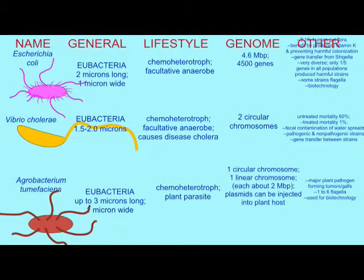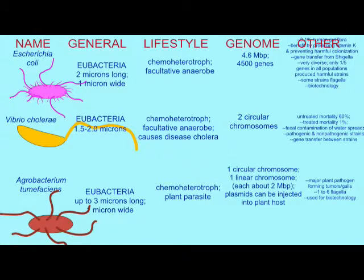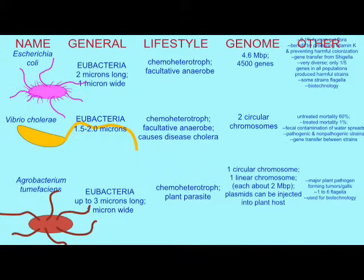Some are useful in biotechnology because plasmids have been added to them, which may contain genes from other organisms including humans. In the wild, different strains of E. coli can be extremely diverse — in fact, only about 20% of all E. coli genes are found in every single strain of E. coli.